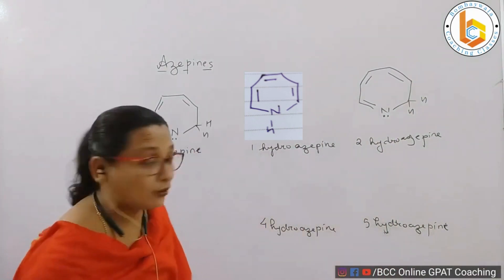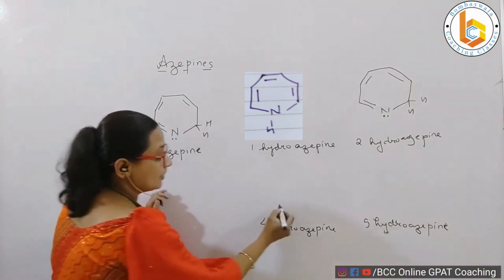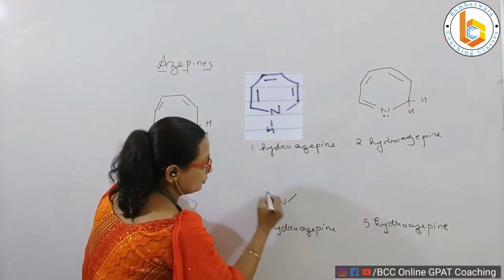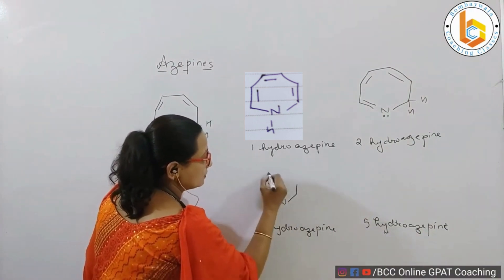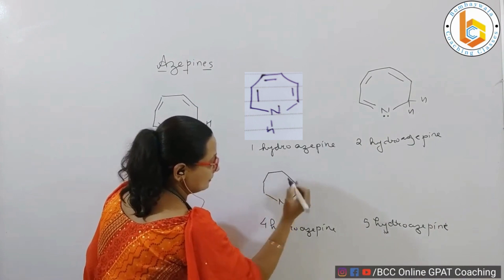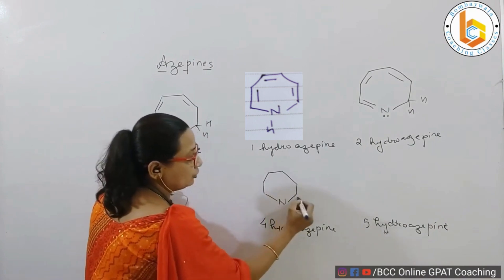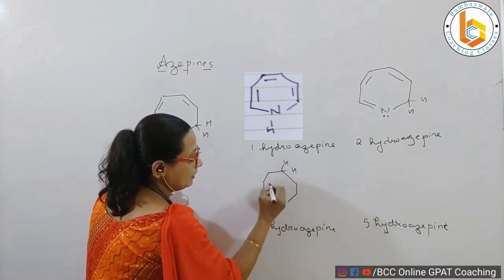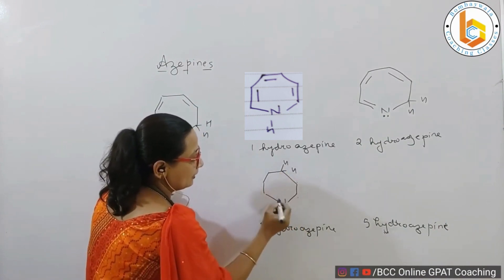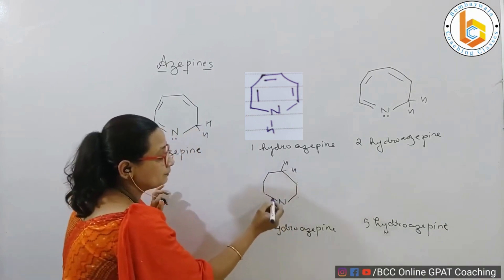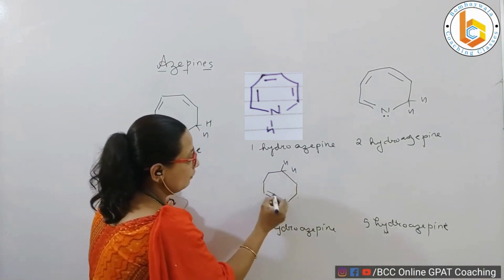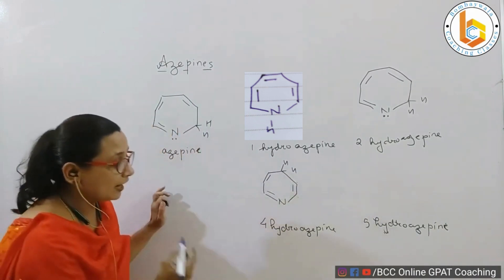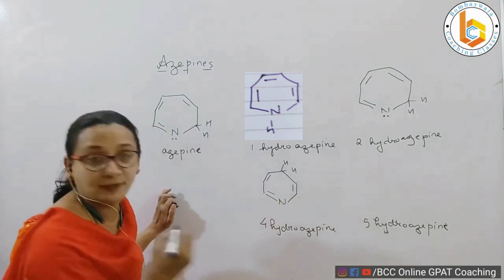If I want to write the structure for 4-hydroazepine, this is nitrogen at position one, then two, three, four. There are four hydrogens at these positions and the remaining portion is aromatic — positions one, two, three, and four. This is 4-hydroazepine.